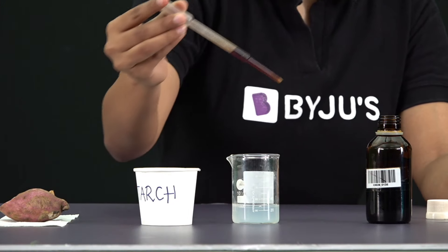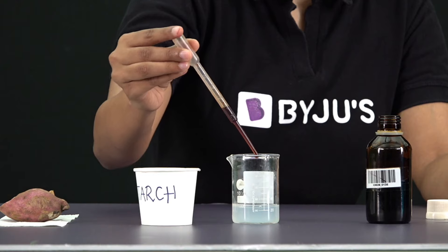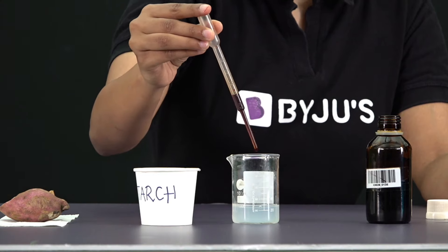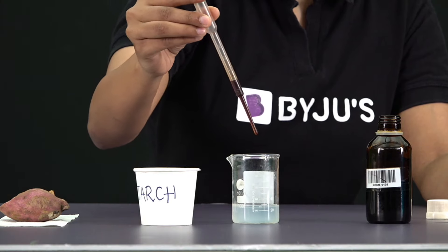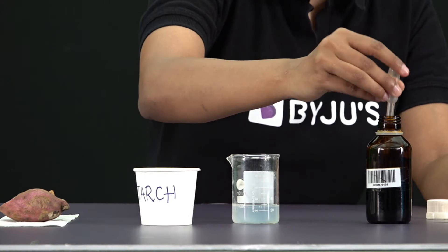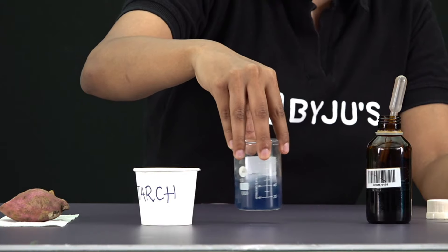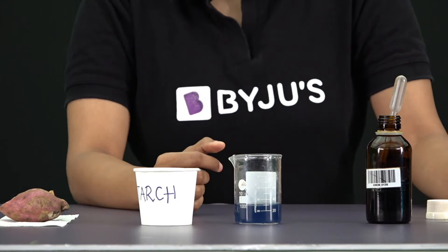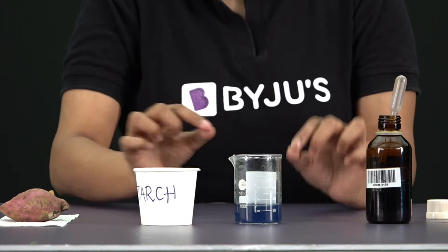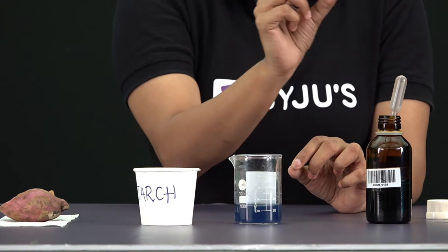Now what we are going to do is add a drop of iodine to the starch solution. Our brownish color iodine — I'm just adding one drop — and I'm going to mix it. Voila! What do you observe? We see here that the whitish color and the brownish iodine have now come together and given us a blue-black color, which means that if starch is present, this is the color change we would observe.